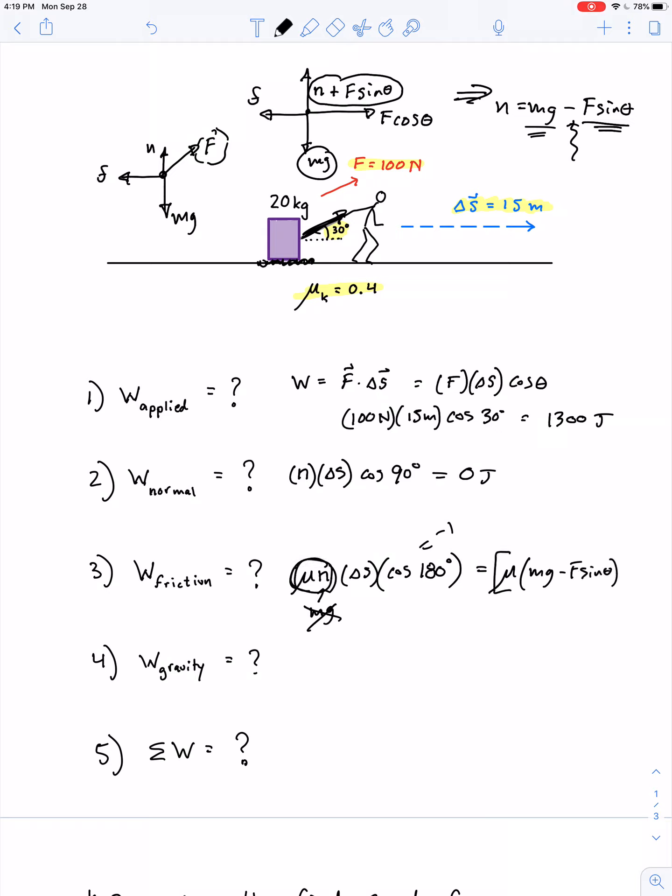So what does this calculate to? 0.4 times 20 times 9.8 minus 100 times the sine of 30. Well, sine of 30 is 1 half. And then all that multiplied by 15. Of course, this 20 is kilograms, and the 9.8 is meters per second squared, and the 100 is newtons, and the 15 is meters.